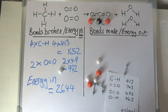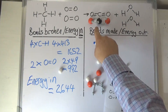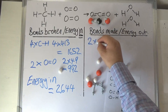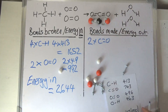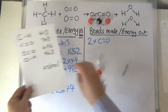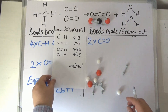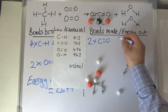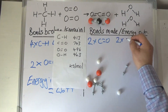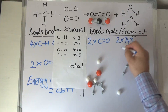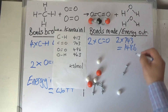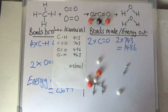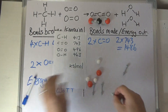So we need to work out how much energy is released. We've just formed two of these double bonds between the carbon and an oxygen, so that's two times C=O. From our bond energy table we can see that each C=O bond is 743 kilojoules per mole, so that's two times 743, which comes to 1,486 kilojoules per mole.